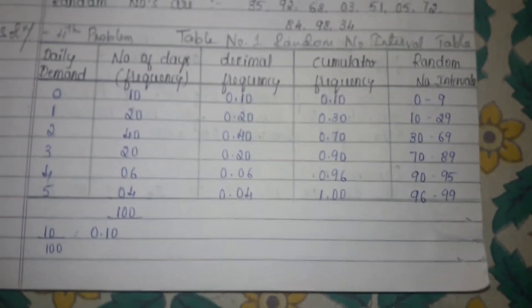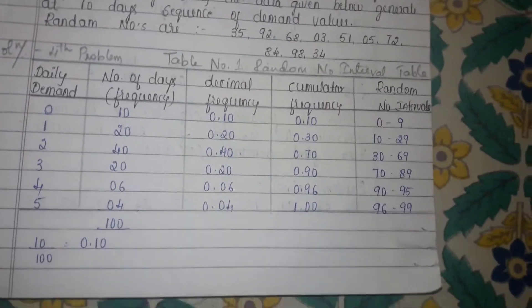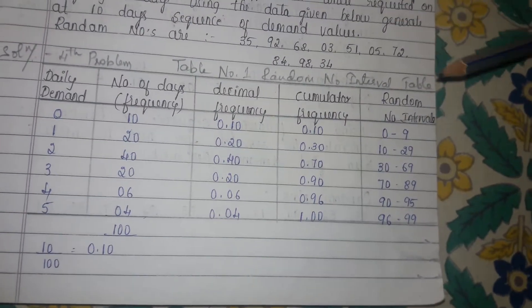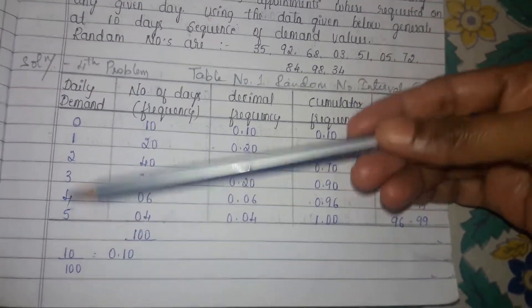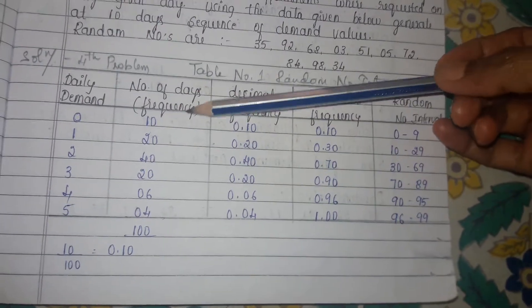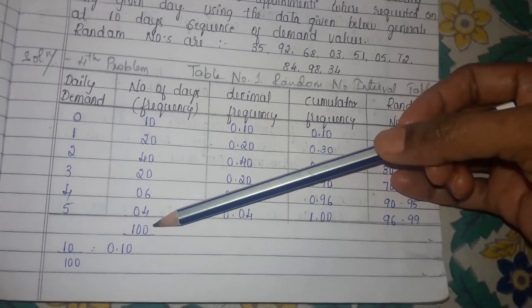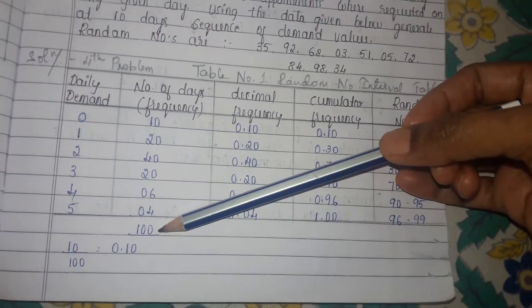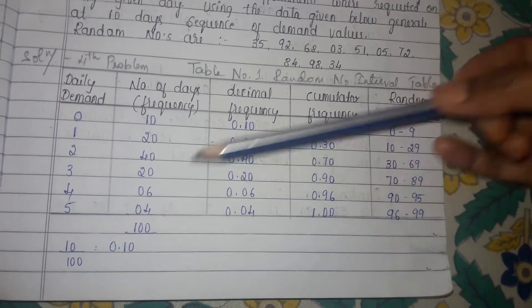This is the solution for the fourth problem. The first step is the computation of the random number interval table. If you observe here, the daily demand is given from 0 to 5. You are given the frequency in terms of number of days, and the total of the frequency column works out to 100.